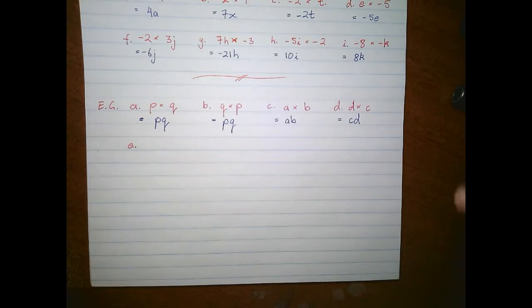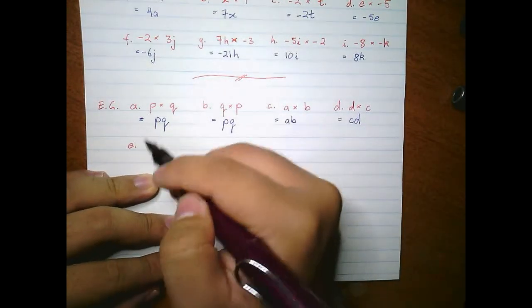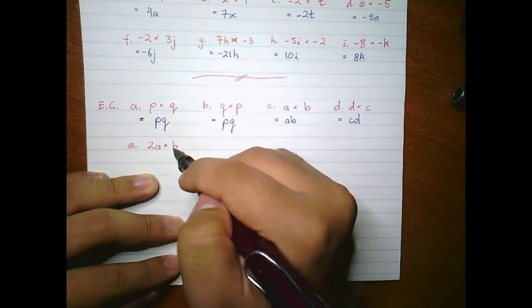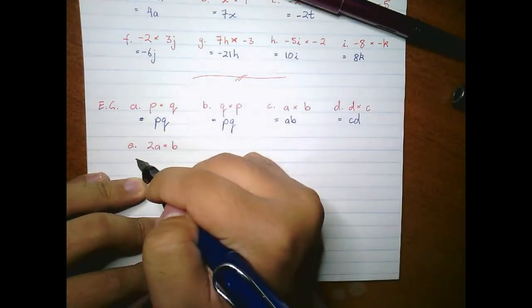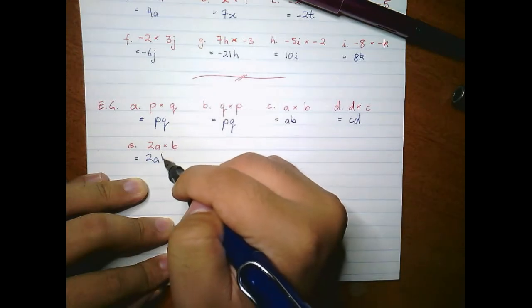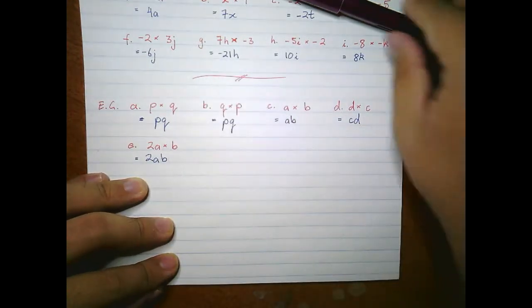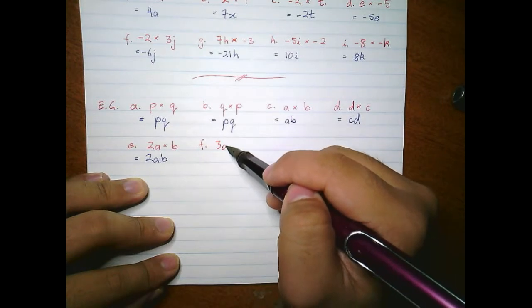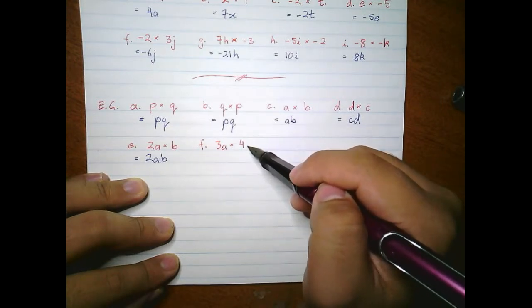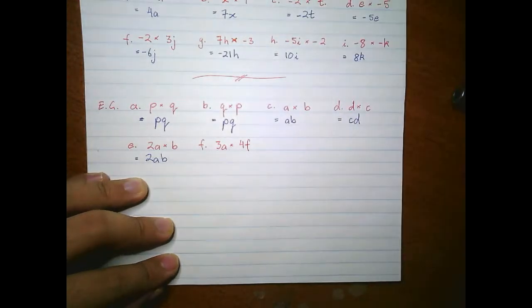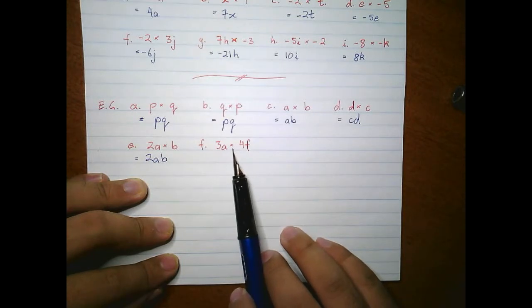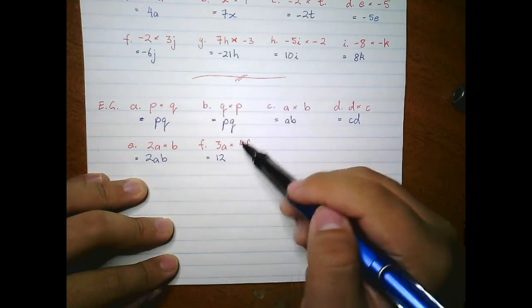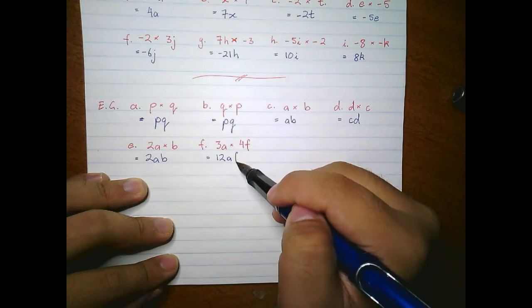Now let's start merging a few things together. For example e, if we had 2a times b, this will just become 2ab. For example f, if we had 3ab times 4f, remember it's the numbers first: three times four is twelve. The letters just follow, giving us 12abf.